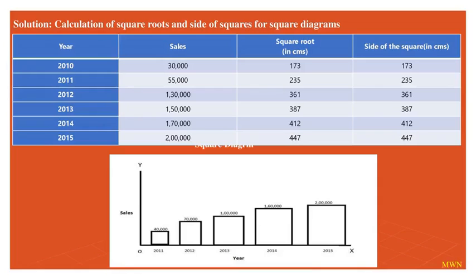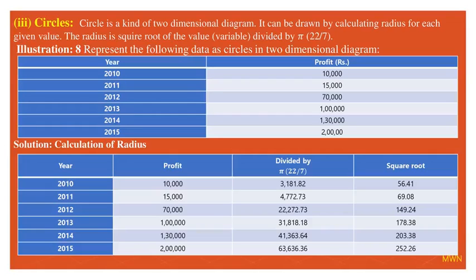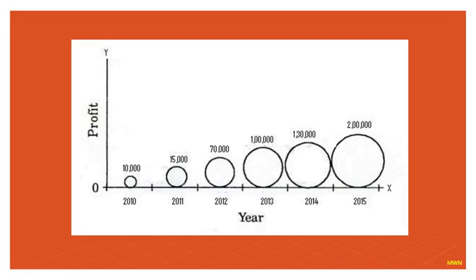Circles: the variable should be converted by dividing by π (22/7), then the square root should be taken to determine the radius for each year. Here, 2010 to 2015 data is shown. 2010 has a small size, 2015 has a large size, so one can easily identify the high growth in 2015 compared to 2010.